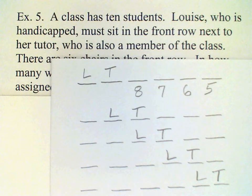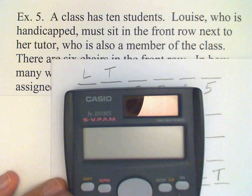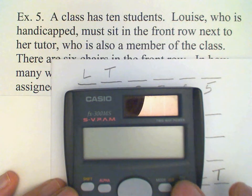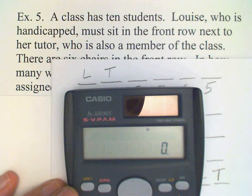And for each of these possibilities for Louise and her tutor, there are 8 times 7 times 6 times 5. Let's see what that is. 1,680.